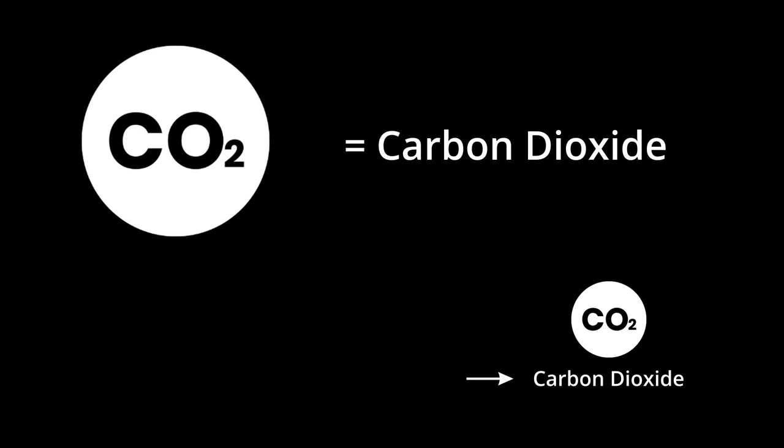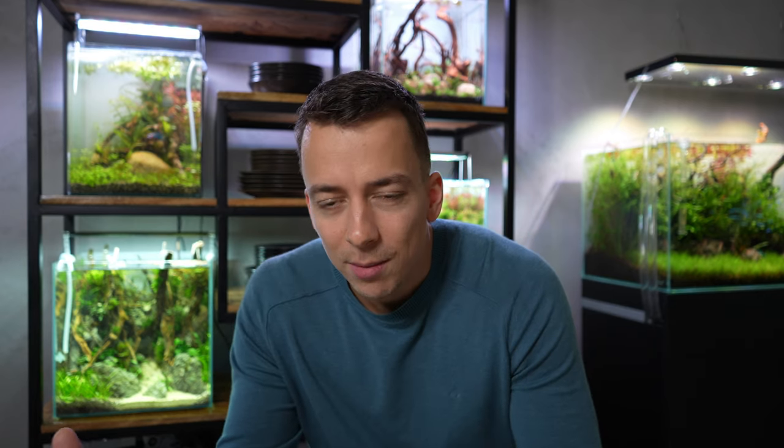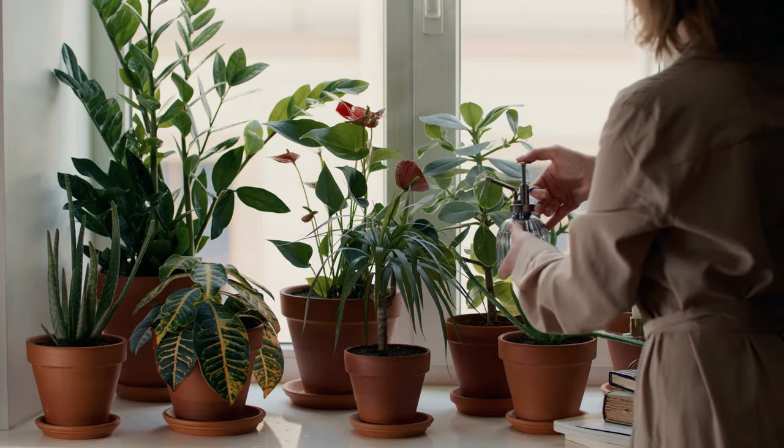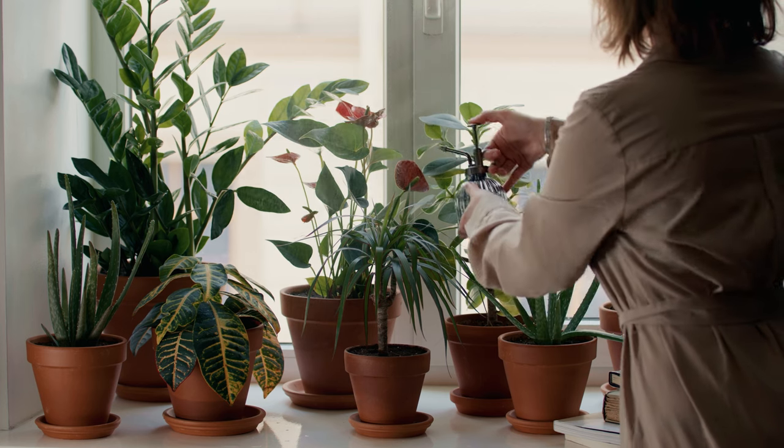Let's start at the very beginning and talk about what CO2 actually is and why your aquarium plants might need it. To put it very simply, CO2 stands for carbon dioxide, and carbon dioxide is formed when you combine carbon with oxygen. Oxygen is all around us and carbon is a basic element that can come from many different things. When we breathe out, we actually release CO2. So there's plenty of CO2 available in the air — that's why when you're growing a house plant, you don't need to worry about it. But for aquatic plants it's a little bit different, because CO2 concentrations in water are a lot lower.